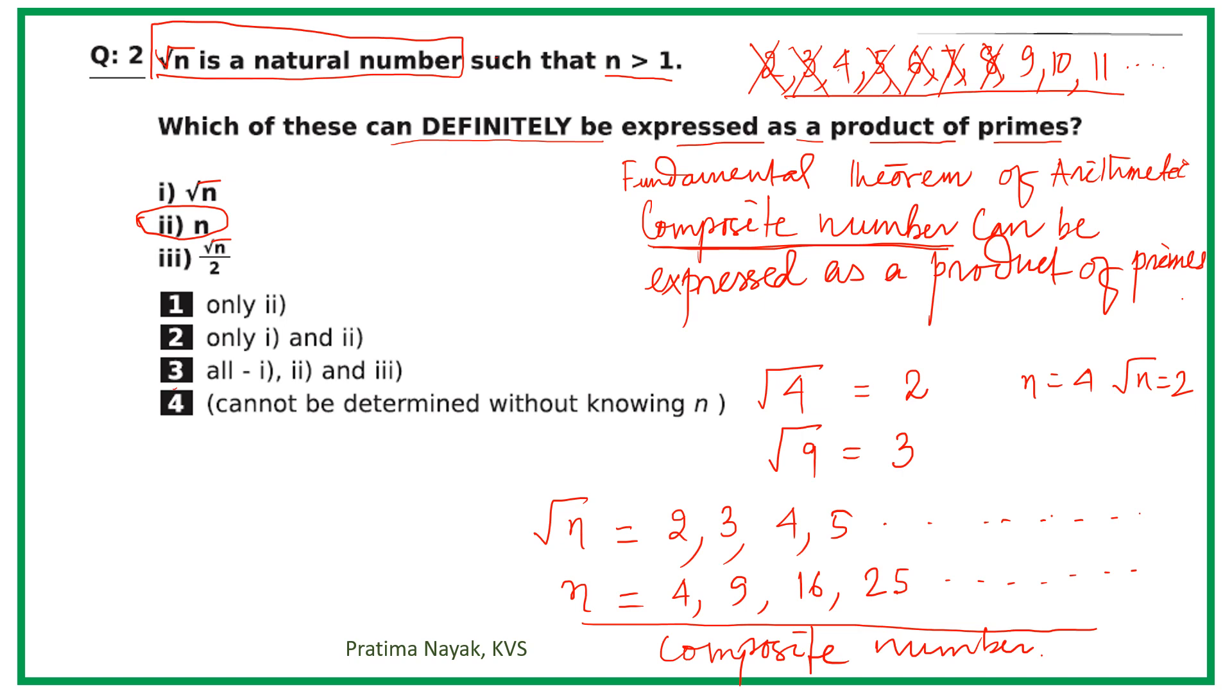Square root of n is 2, 3, 4, 5, 6, and so on. Here you will find that some square root of n, for example 4, it is again composite. Square root of 8, this is composite number. So they can also be written as product of primes. So this is also true.